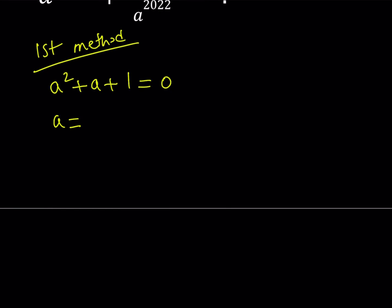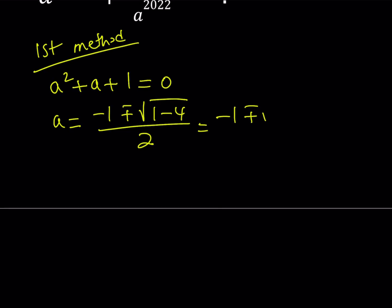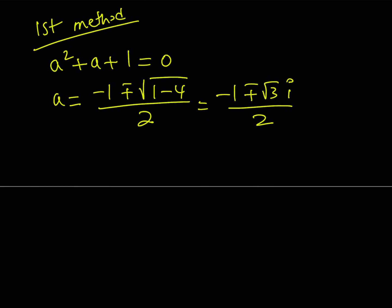a equals negative b, which is negative 1, plus or minus the square root of b squared, which is 1, minus 4ac, which is 4, divided by 2a. 1 minus 4 is equal to negative 3. The square root of negative 3 is not a real number. Therefore the answers are going to be complex. We can write this as negative 1 plus or minus the square root of 3 multiplied by i, divided by 2. So that gives us two roots, and we can use any one of them.